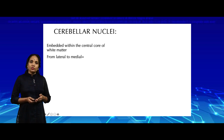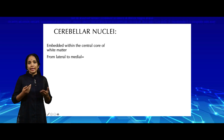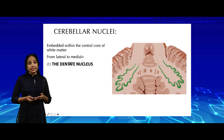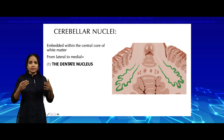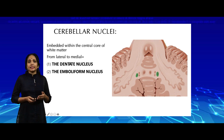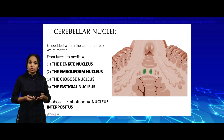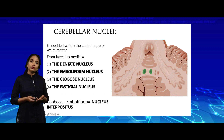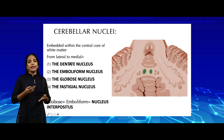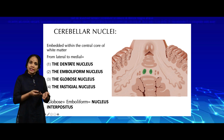Let us see the cerebellar nuclei. They are embedded within the central core of white matter and can be named from lateral to medial: the dentate nucleus, which is the largest and looks like a crumpled paper bag with its hilum directed medially; then the emboliform nucleus; then the globus nucleus further medially; and the most medial is the fastigial nucleus, also called the roof nucleus since it is associated with the roof of the fourth ventricle. Importantly, the globus and emboliform nuclei together are called the nucleus interpositus, as they are positioned between the fastigial medially and the dentate laterally.